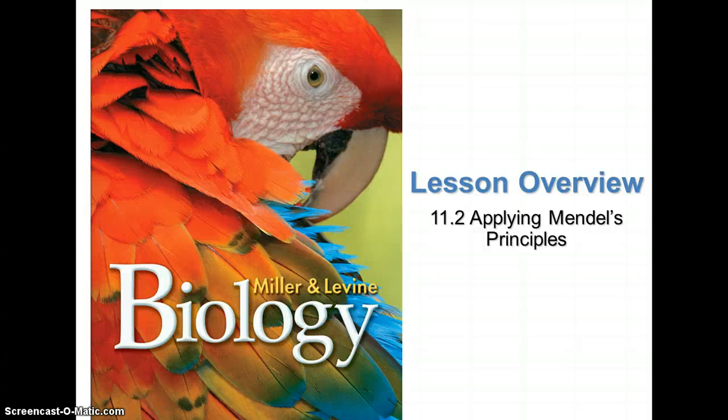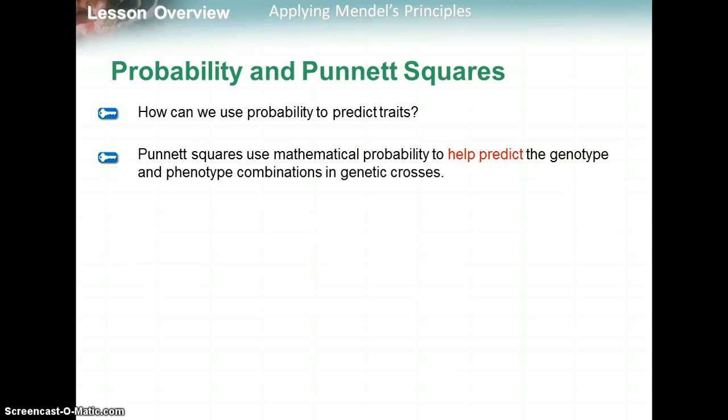We're going to learn about more background on how Mendel came up with some of his theories to solve genetics problems. First, it's all very based on probability. Probabilities help to predict a possible genotype and phenotype, but probabilities help to predict results — not to determine the exact results, but to give us a prediction.